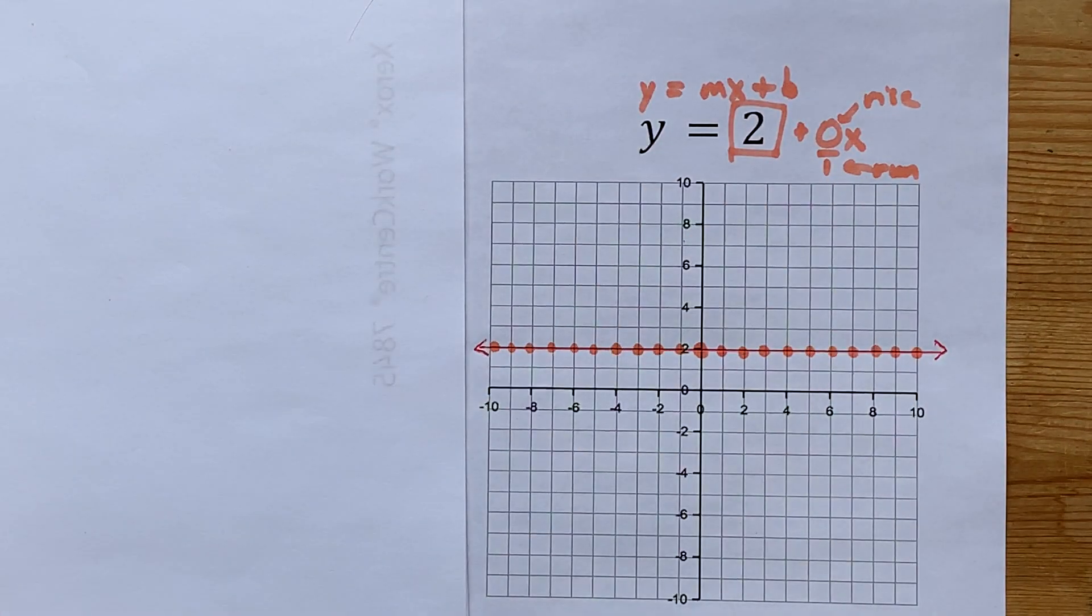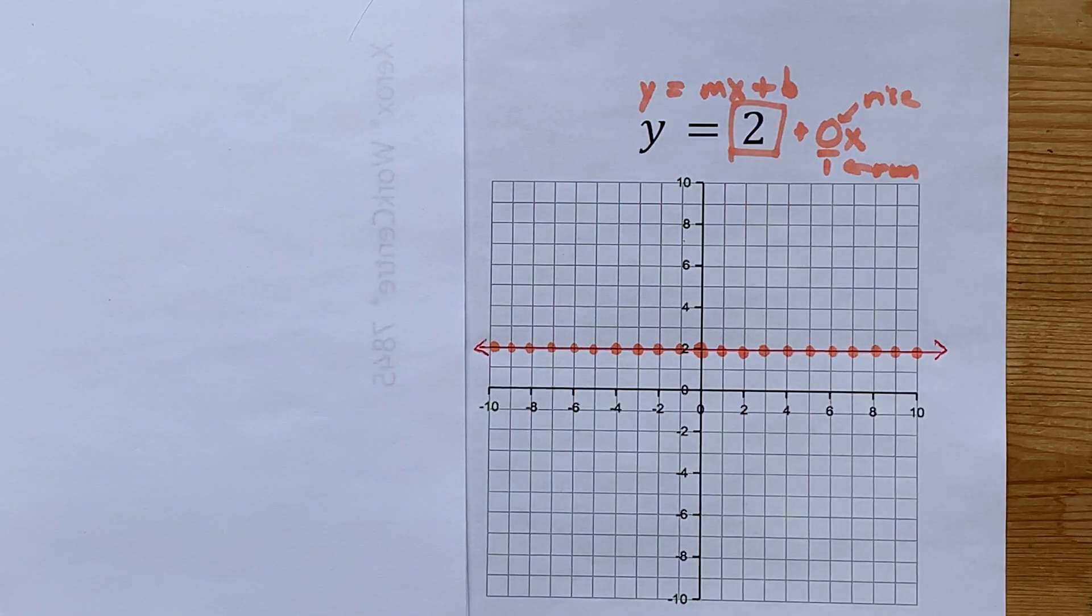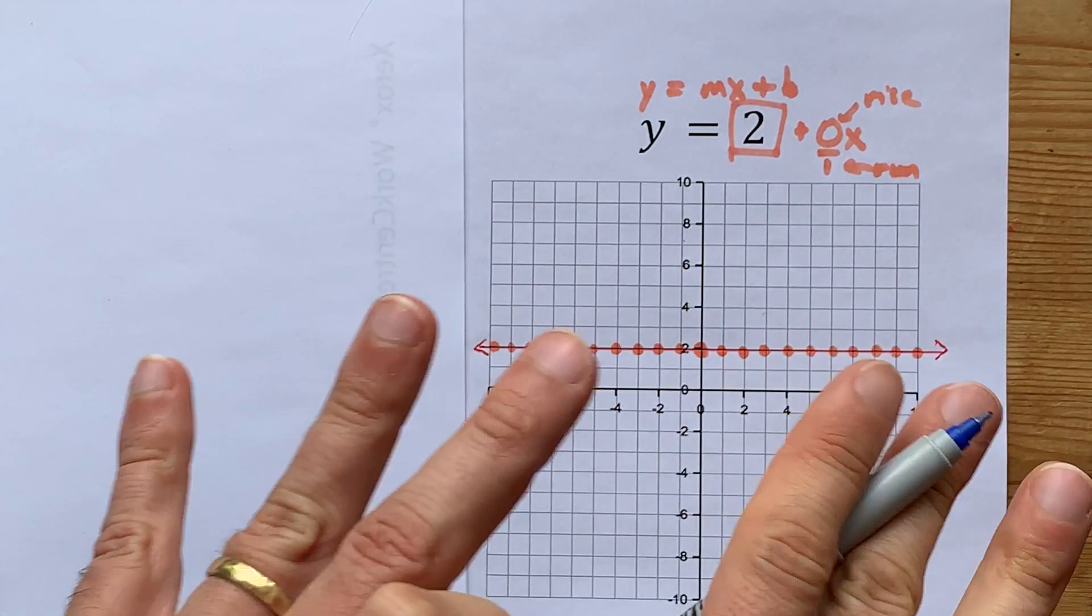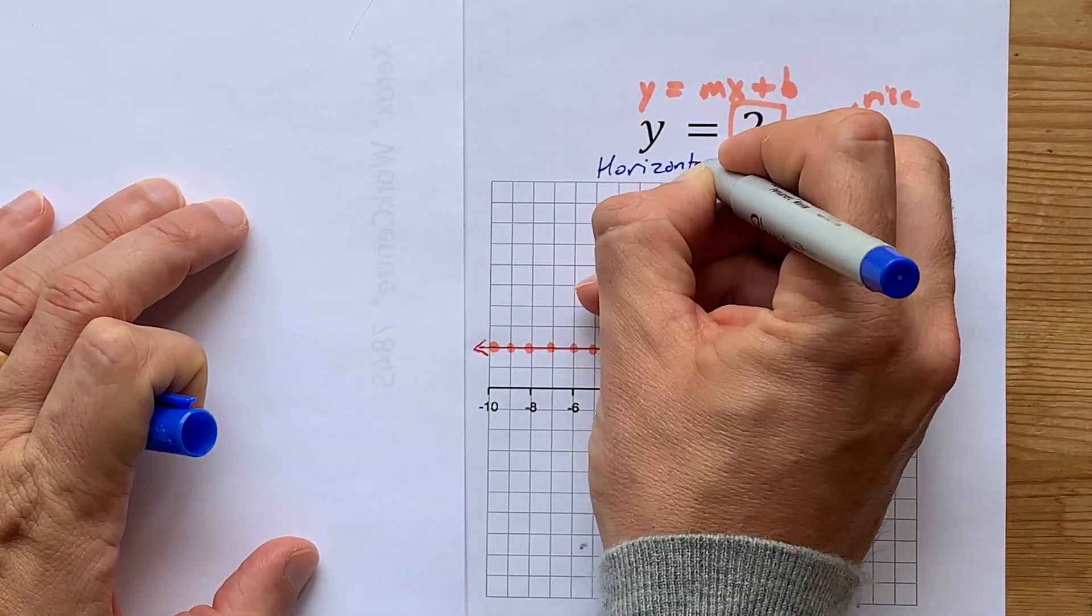And now we get to the shortcut. If you have an equation y equals some number, like a constant, there's no x's. That is, by definition, a horizontal line.